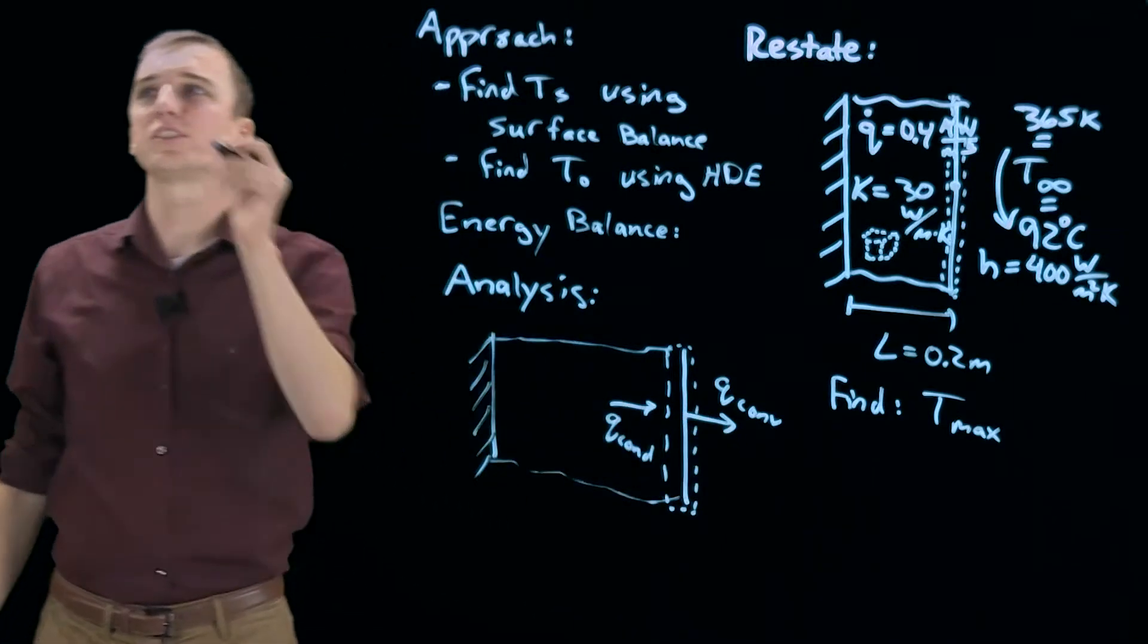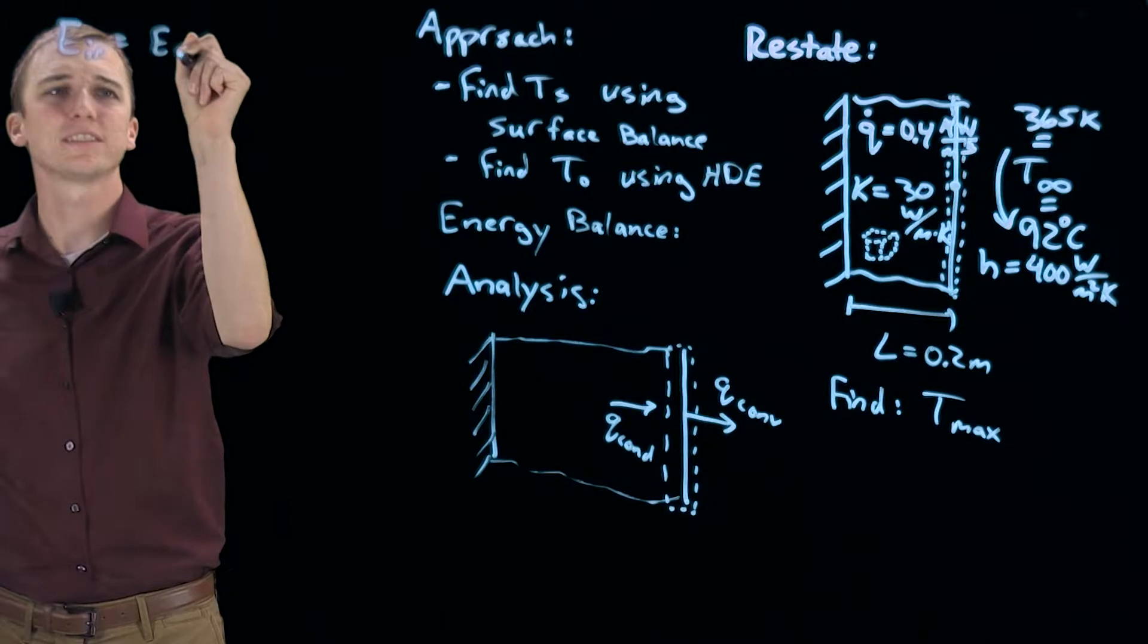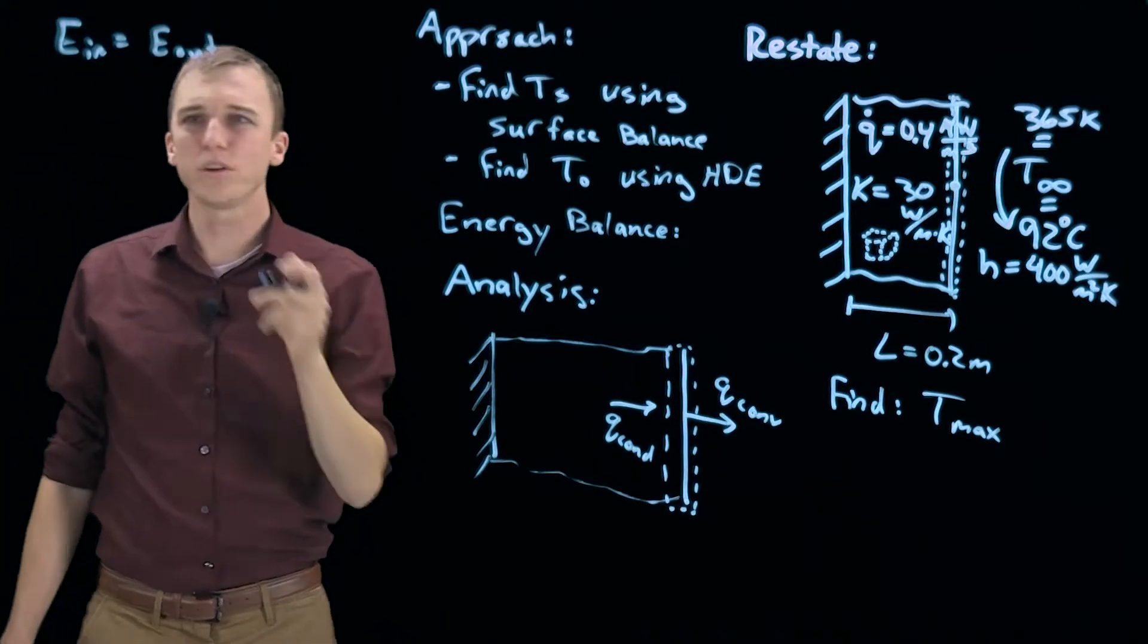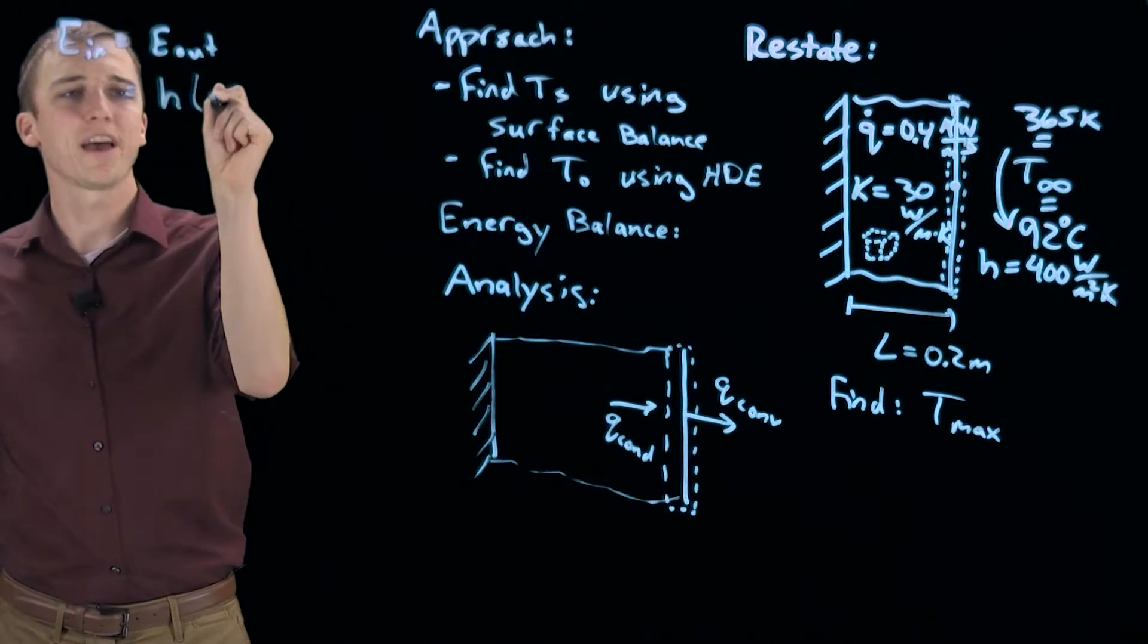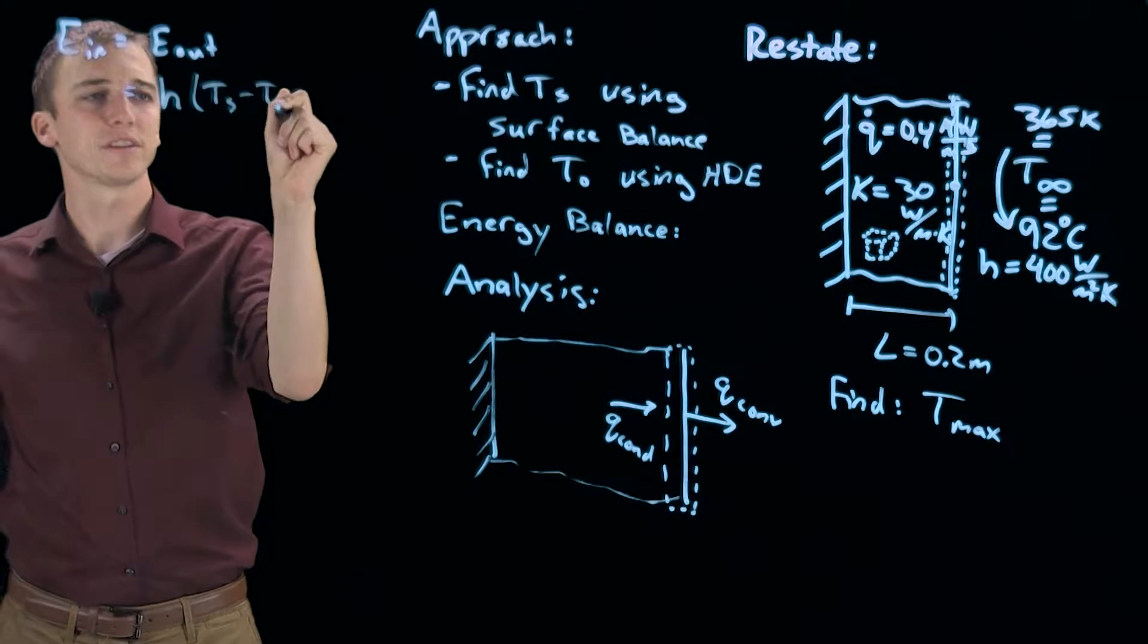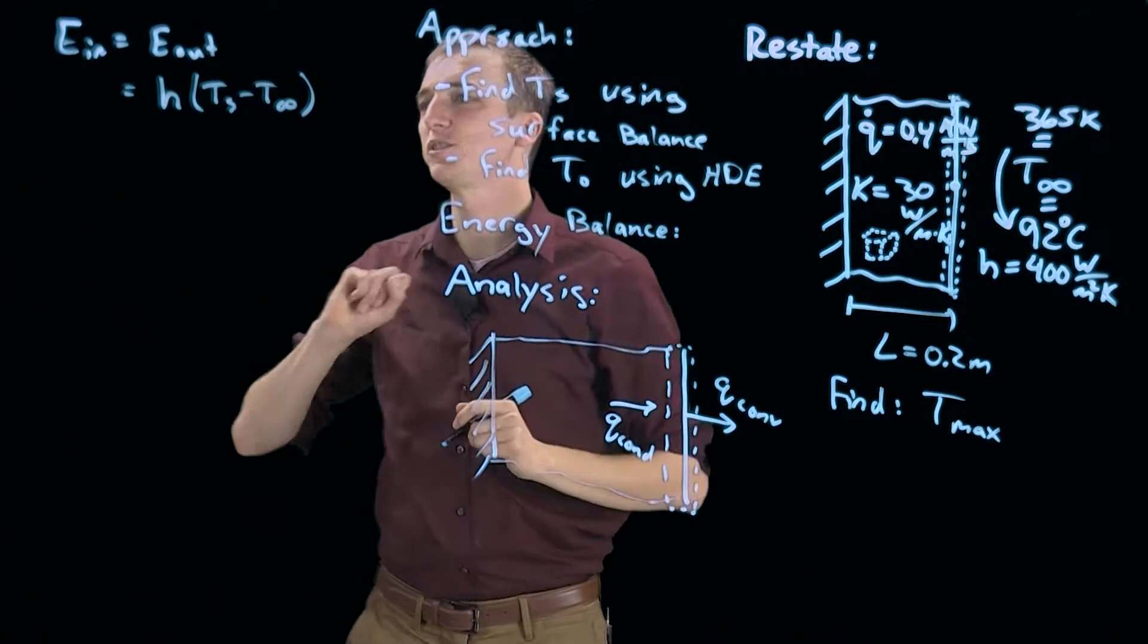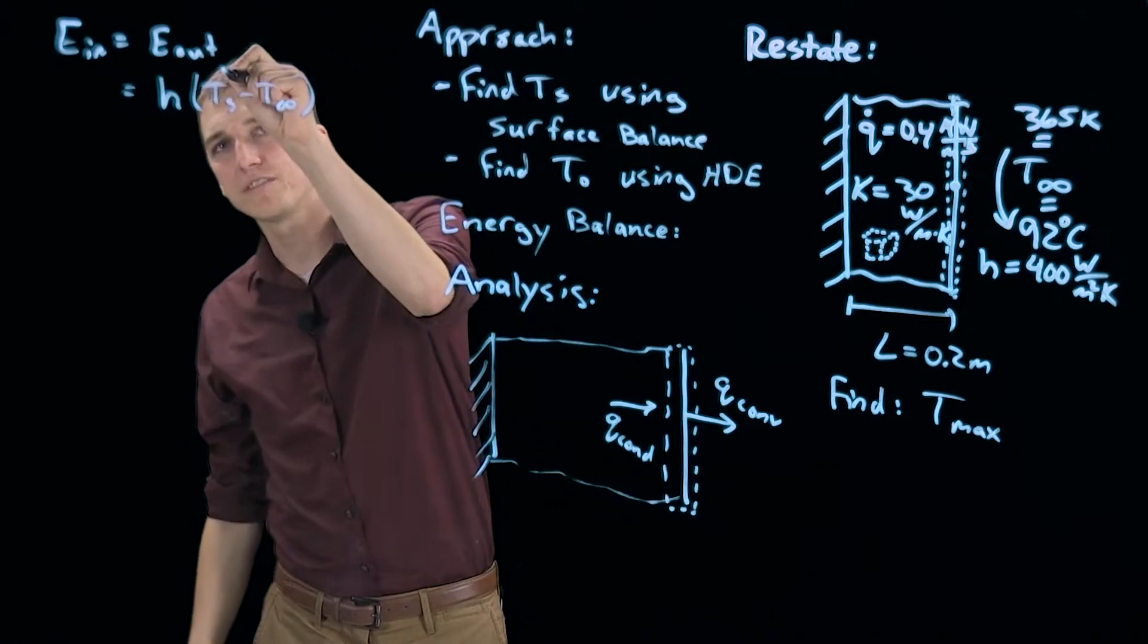So now we just need to write these out with a surface balance. E in equals E out. So what is leaving is convection, Q convection. We always model that with Newton's law of cooling. Our convective heat transfer coefficient times our difference in temperature. Here is what we are looking for, TS.